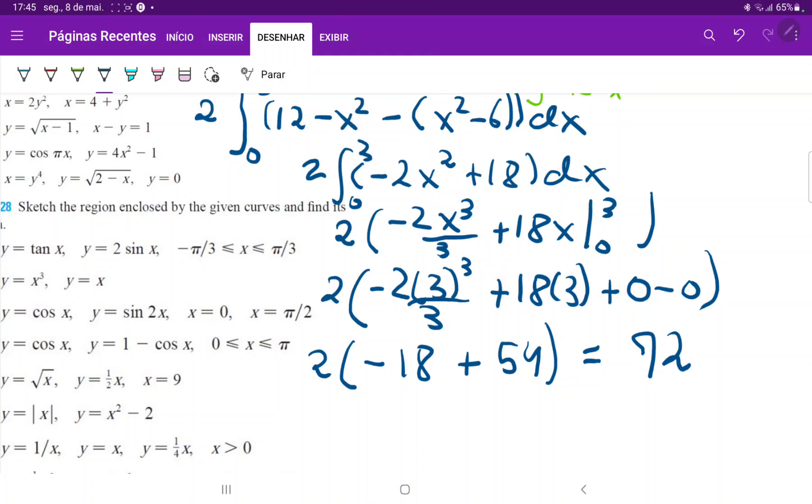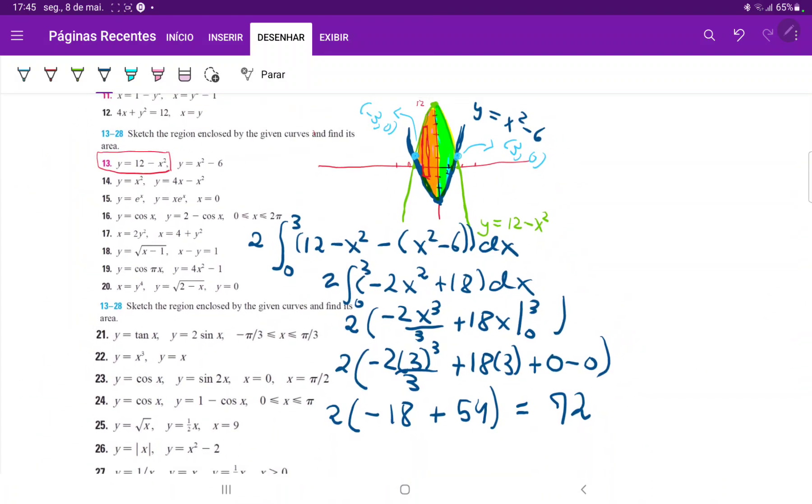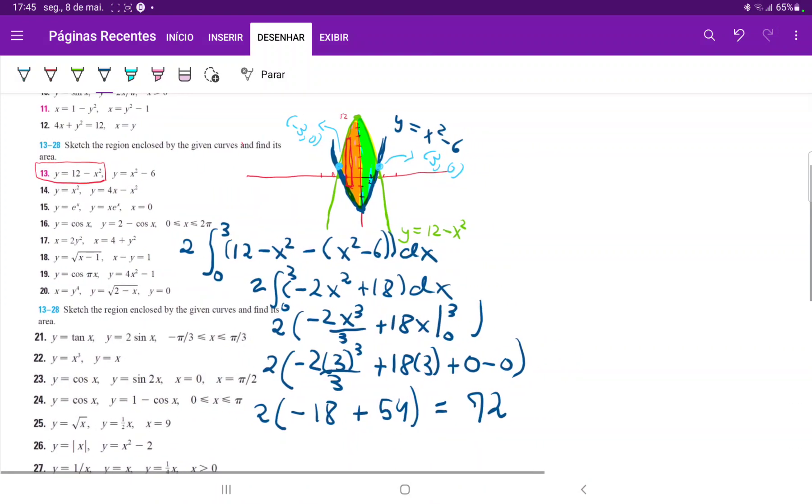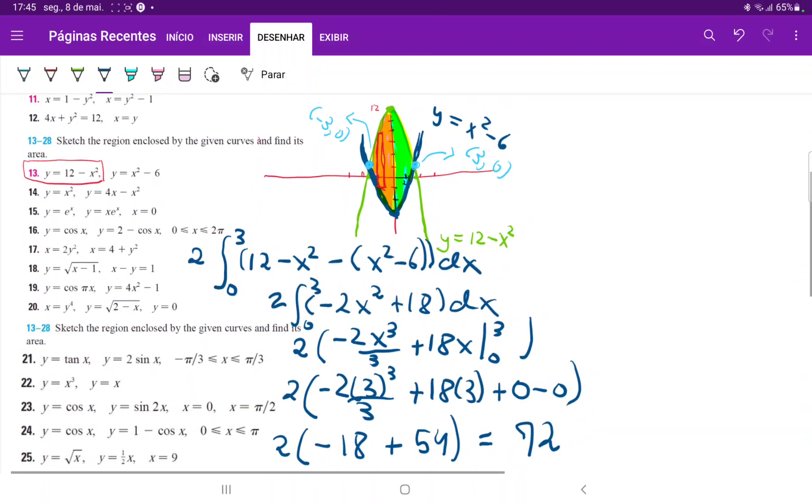So 72 is the answer for the area between these two curves. And we found this by just integrating with respect to x.